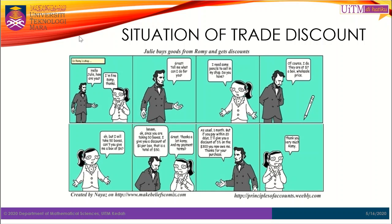Julie agrees and asks about payment terms. Mr. Romy says that since she is a regular customer, she has the usual one-month period to make payment. However, if she pays within 20 days, Mr. Romy will give an extra discount of 5% on the 300 ringgit total. Julie agrees to this arrangement.